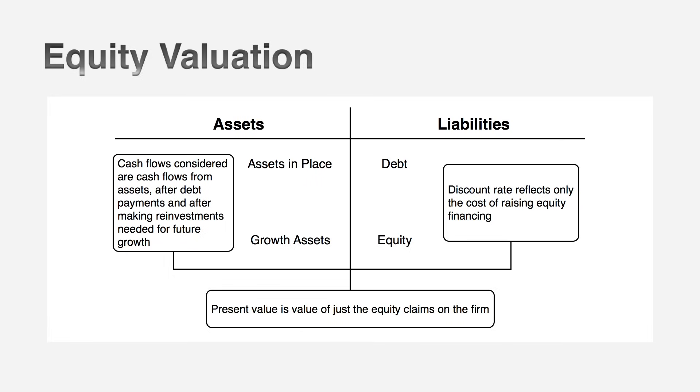Here's one vehicle I find very useful for thinking about discounted cash flow valuation: the financial balance sheet. I prefer this over an accounting balance sheet. On the asset side, there are only two items: investments in place — investments already made that are producing cash flows today — and growth assets, which are investments expected in the future, even investments you haven't thought about yet. That's exactly what you do when you value a growth company: you're giving them credit based on expectations, perceptions, and hope.